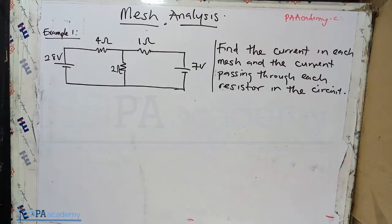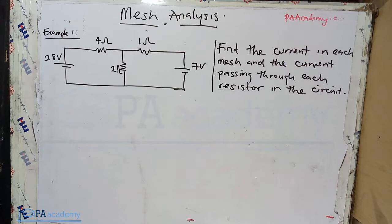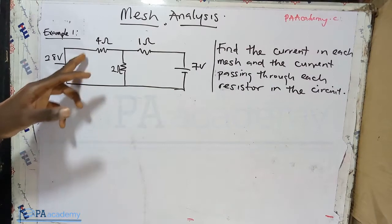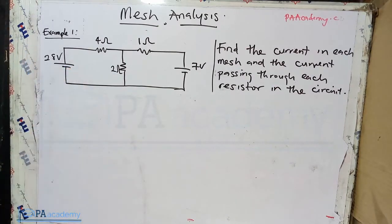Hello everyone, welcome back to PE Academy. This is the example 100 video series on mesh analysis. In the previous part, it was more of an introduction to mesh analysis where I talked about what mesh analysis is all about and how to go about solving them. Now in this example, we are going to be using real numbers — you can see we have a circuit here, unlike the other ones where we used alphabets. Before I continue, if you missed the previous introduction part, please check the description for the link.